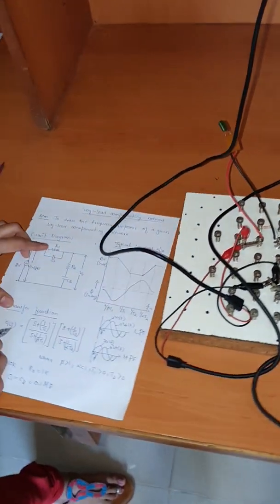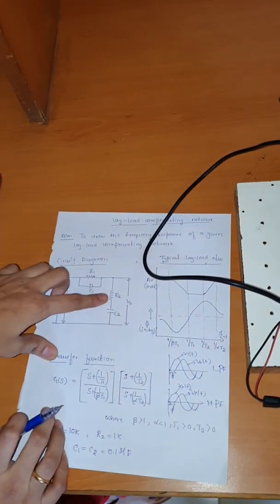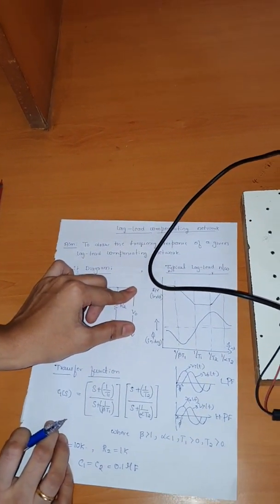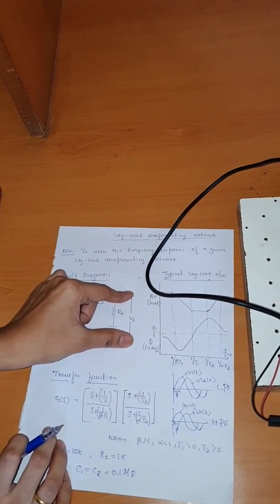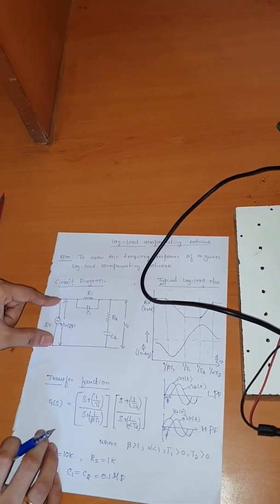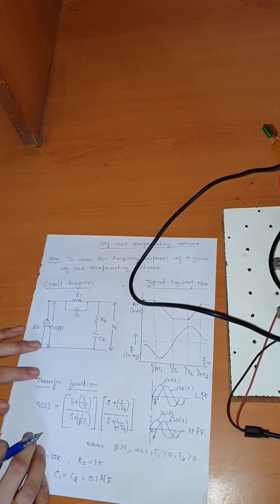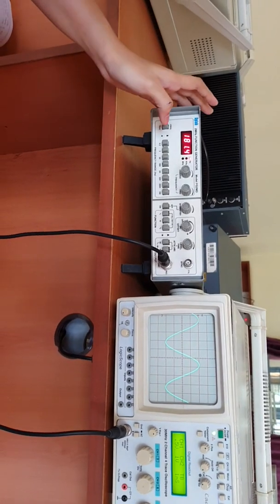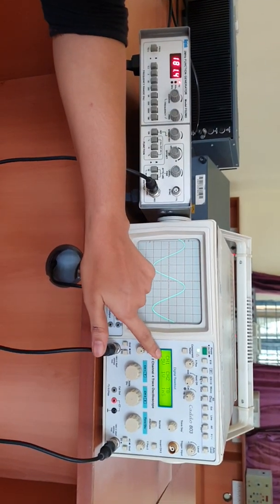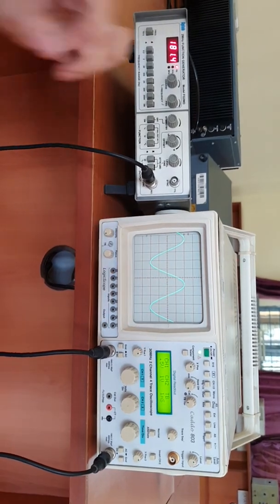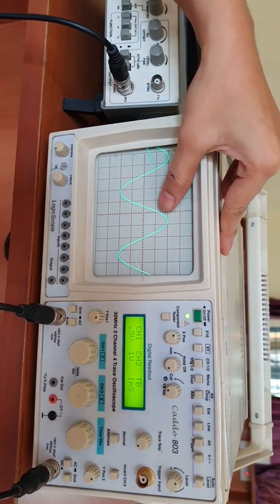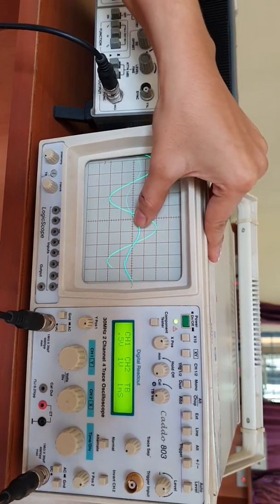Observe the circuit: R1 is connected in parallel with C1, and R2 is connected in series with C2. Across the output terminal, we connect the CRO output channel and the voltmeter. The signal generator input and CRO input are connected on the input side. Using the signal generator, we set 2 volts peak to peak — four divisions multiplied by 0.5 volts per division equals 2 volts peak to peak. By selecting the dual option on the CRO, we can see both input and output waveforms simultaneously.